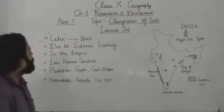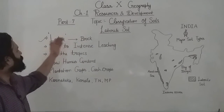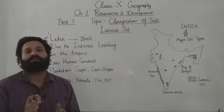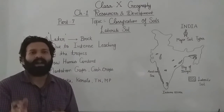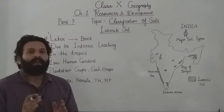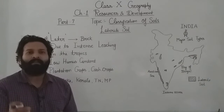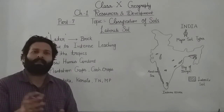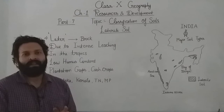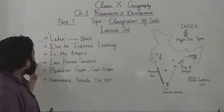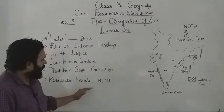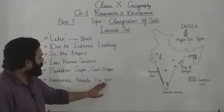To summarize: laterite soil originated from the Latin word 'later' meaning brick. It is a red, hard gravel soil or subsoil that developed in the tropics due to leaching of soluble particles, leaving insoluble aluminum and iron oxide or hydroxide. It is used to make bricks, contains low humus content, and major crops grown include cash crops. It is found in Karnataka, Kerala, Tamil Nadu, Madhya Pradesh, and northeastern India.